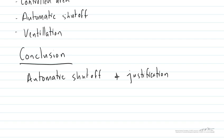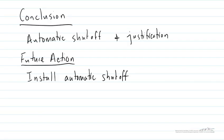And then finally we want to provide a future action which in this case we want to say who should do what and when. Let's say there should be an installation of the automatic shutoff, that the line engineer should be the person installing it and that it should be completed by the 10th of October 2022.